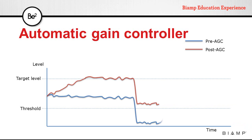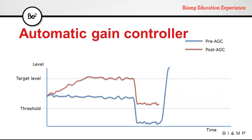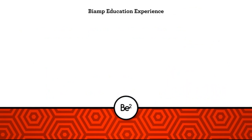If the incoming signal resumes the previous level, the AGC will return its output to the target level. On the other hand, if the input level rises above the target level, the AGC will reduce the output signal to bring it back down to the target level. This processor is ideal for microphones to compensate for different talkers.